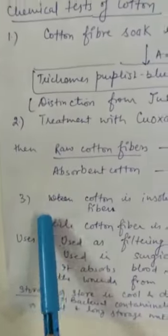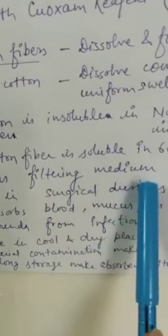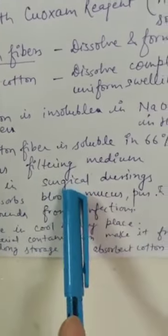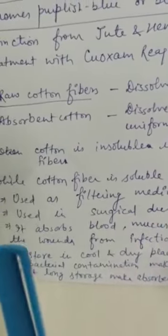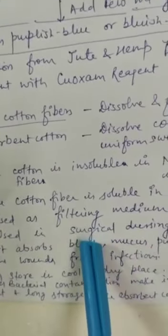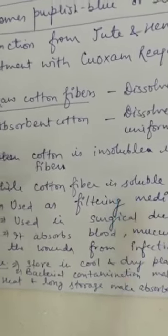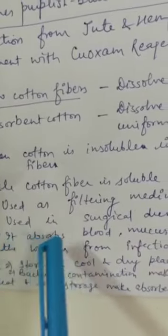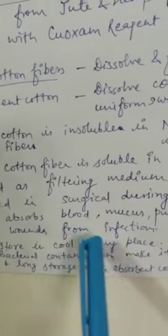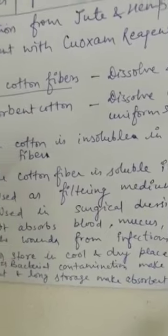Now uses of cotton. Cotton is used as a filtering medium. Second use: it is used in surgical dressing. Third use: it absorbs blood, mucus, pus and prevents wounds from infection. Whenever there is an injury, we apply cotton on it.